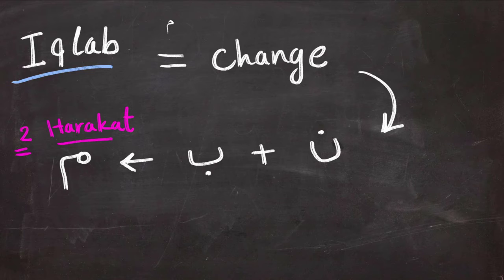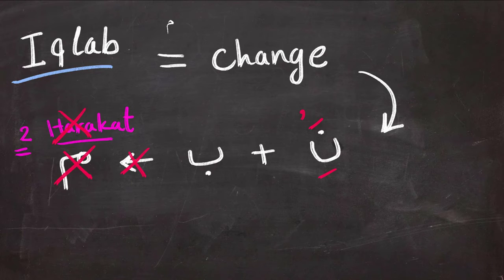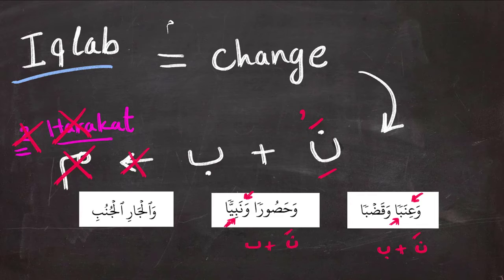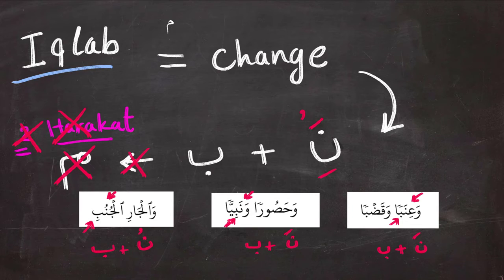Notice: if there is any movement or a short vowel on top of the Nun or under, then nothing special is going to happen. So we pronounce the Nun and the Ba separately, normally, like any other letter.